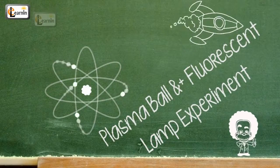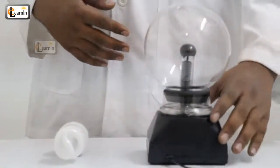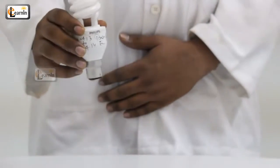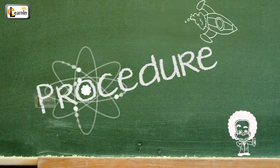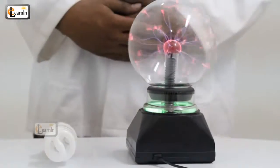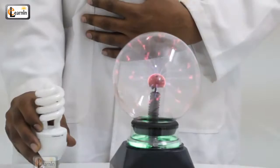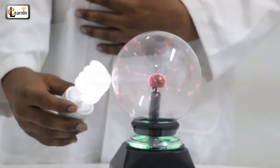Plasma ball and fluorescent lamp experiment. For this experiment you'll need a plasma lamp and a fluorescent bulb. Procedure: First, switch on the plasma light, take a fluorescent lamp, and bring it near the glowing plasma light. Now observe what happens.